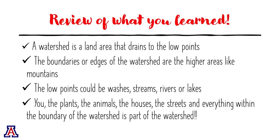Let's review what you just learned. You learned that a watershed is a land area that drains to the low points. You also learned that the boundary or edge of a watershed are the higher areas like mountains. You also learned that the low points could be washes, streams, rivers, or lakes. And lastly, you learned that you, the plants, the animals, the houses, the streets, and everything within the boundary of a watershed is all part of the watershed.